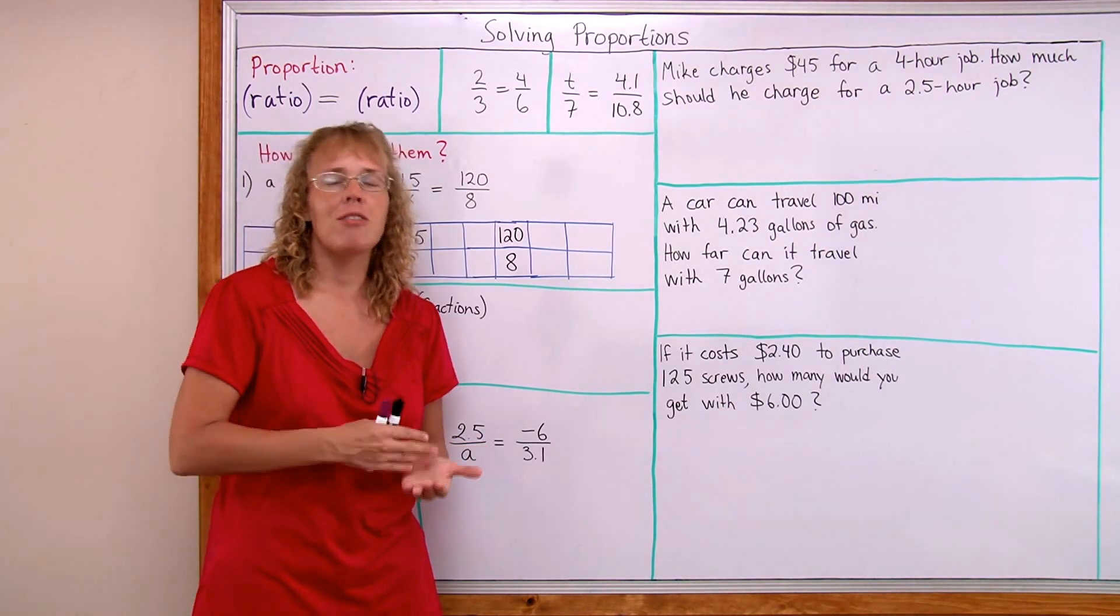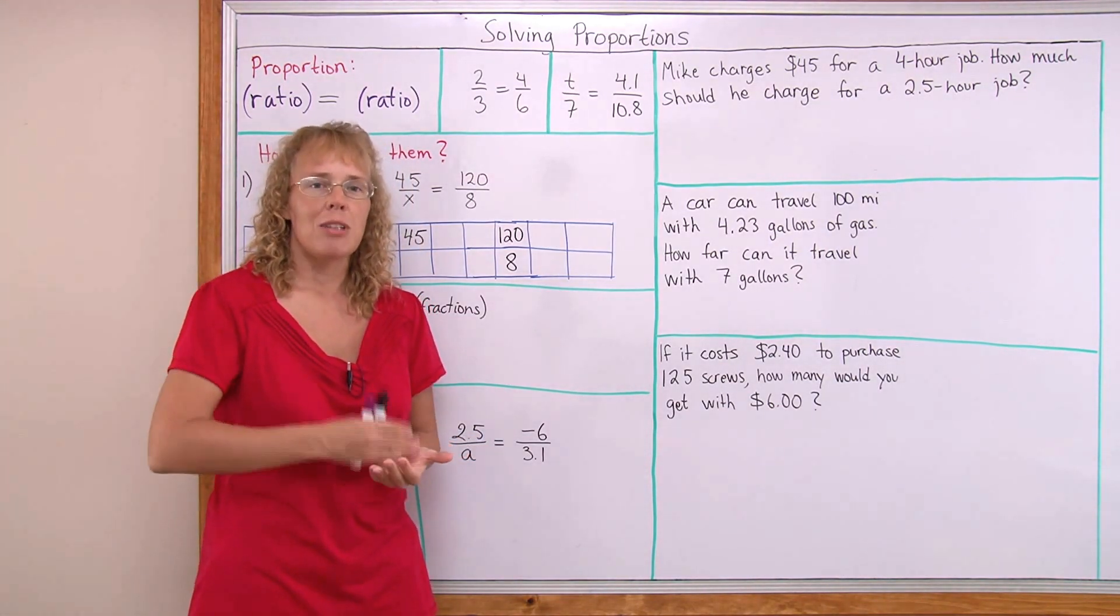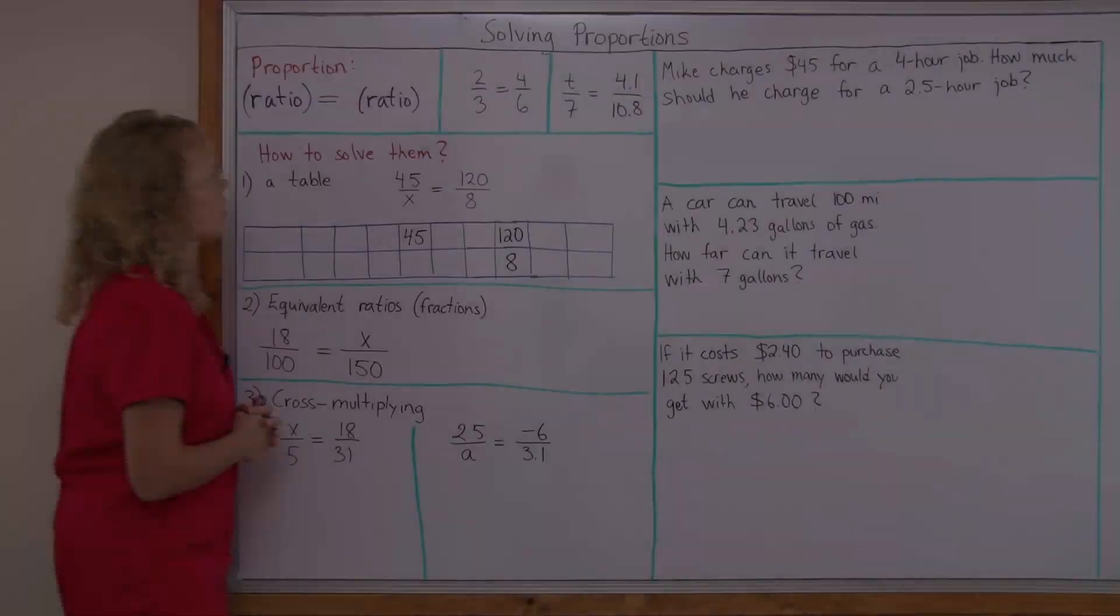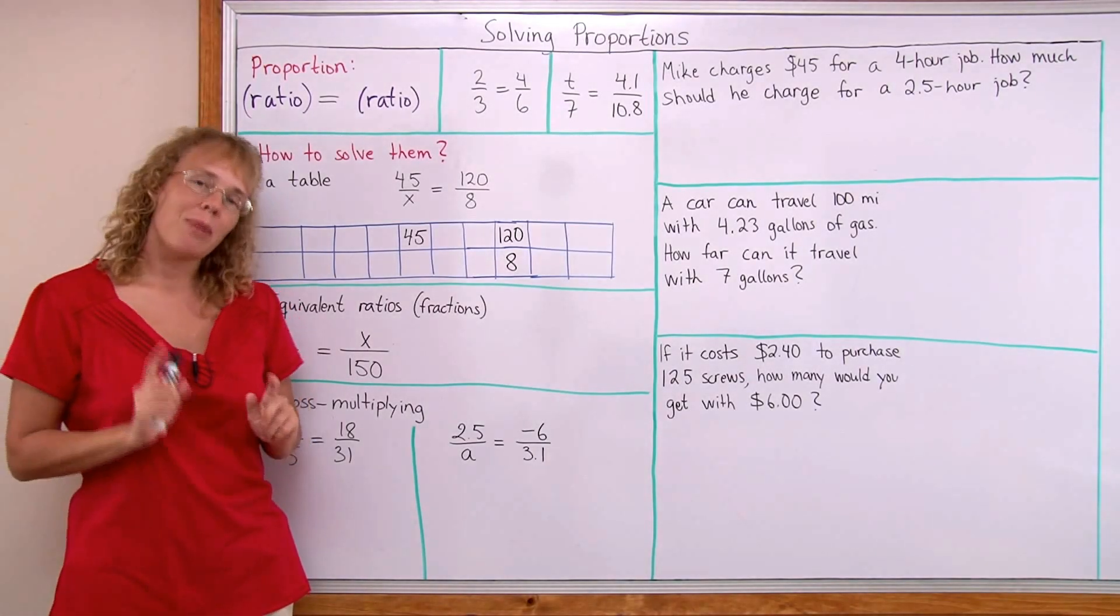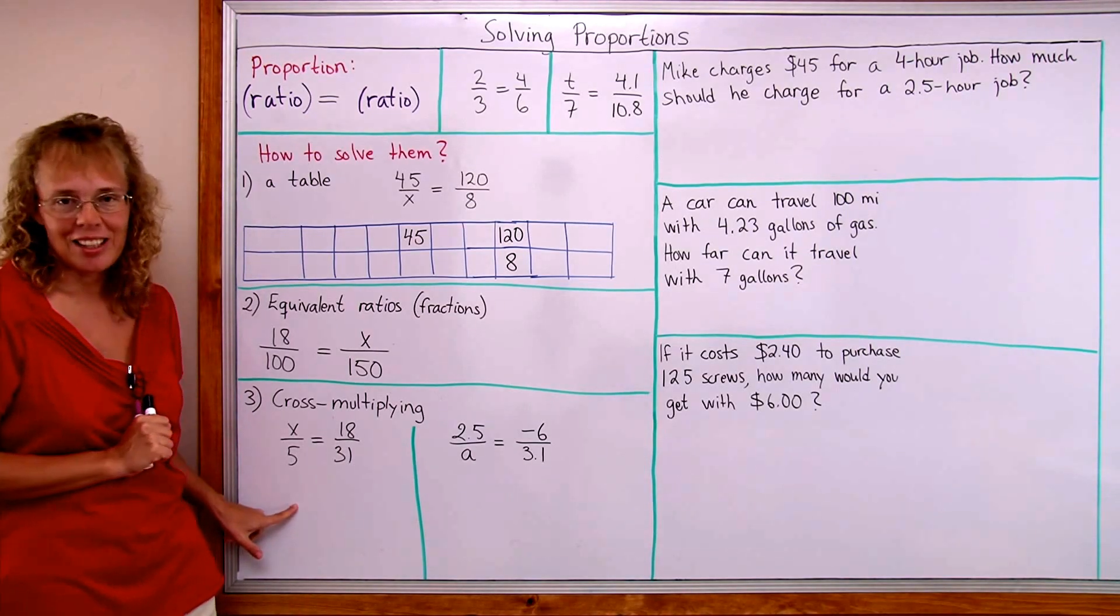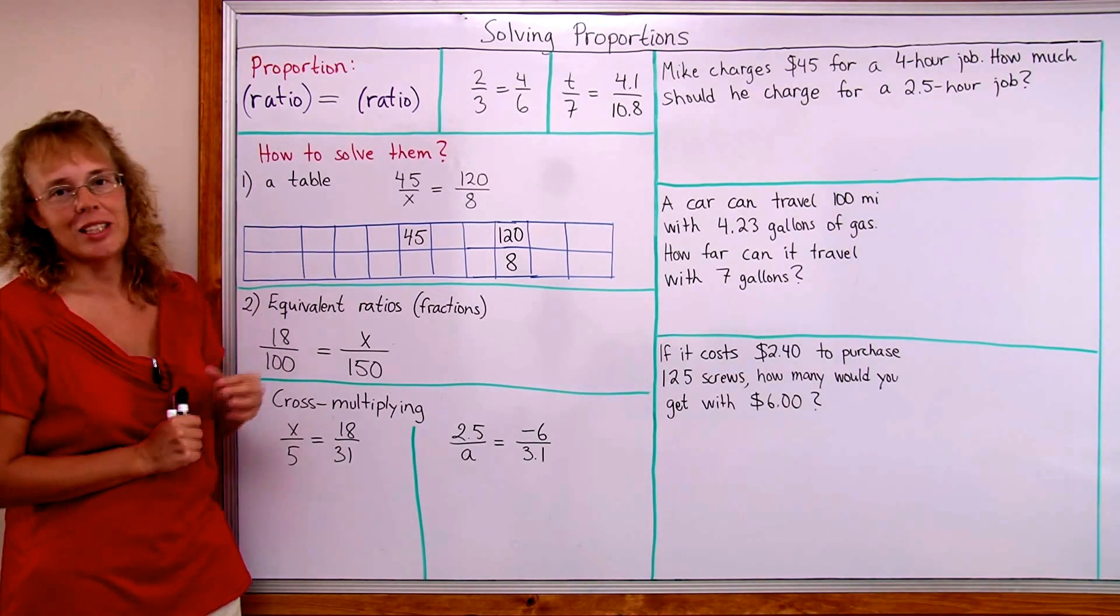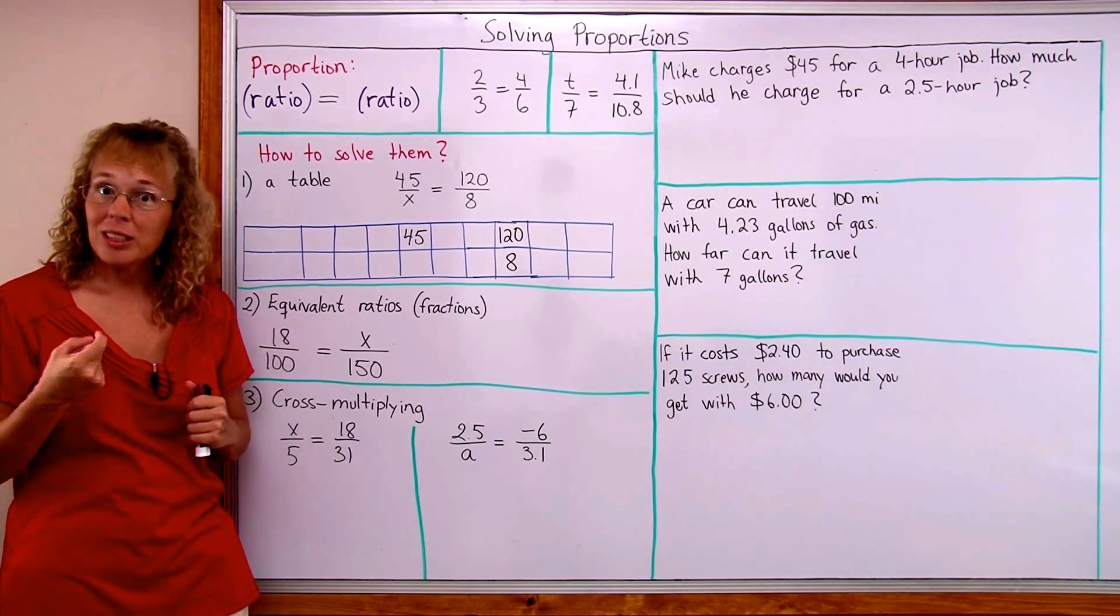They are just a few examples of where we encounter proportions in real life. Wherever you have ratios, wherever you have two quantities that are in the same ratio. Okay, and there are several ways to solve proportions. The main way being cross-multiplying. But I'm going to show you two other ways too that work if your numbers are easy enough.